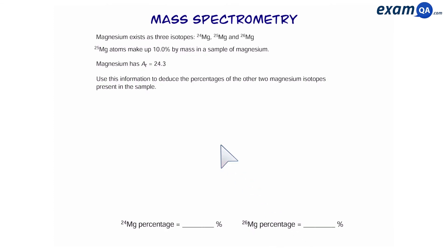Here's another style of question. We have three isotopes of magnesium: 24, 25, 26. Magnesium-25 makes up 10% of all the isotopes. And magnesium has a relative atomic mass of 24.3, which is the average of all the isotopes. Work out the percentage of 24 and 26.